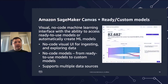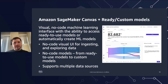Next is SageMaker Canvas plus ready-to-use or custom models — a no-code machine learning interface where you can either use ready-to-use models or create ML models on your own automatically. It can be used for data exploration, training models, and it supports multiple data sources.